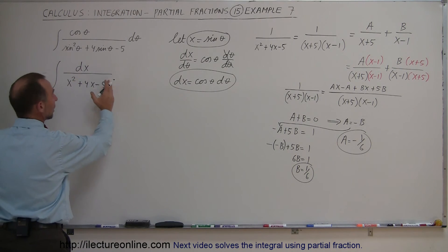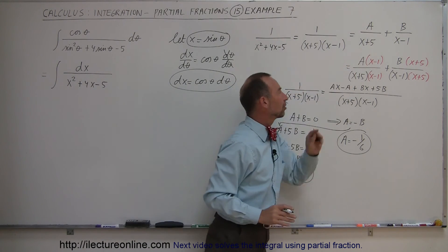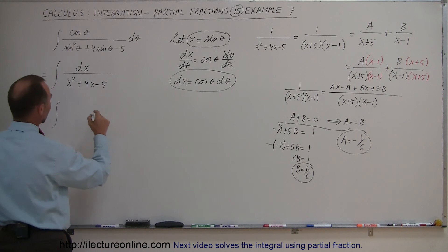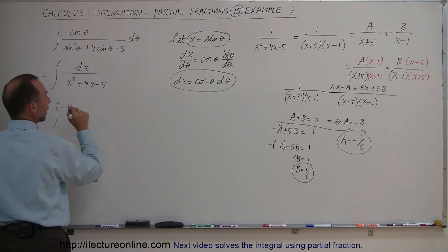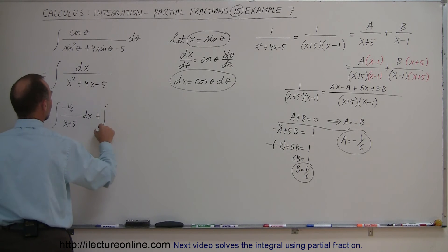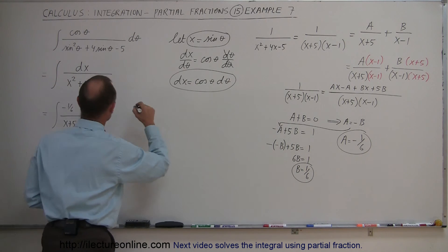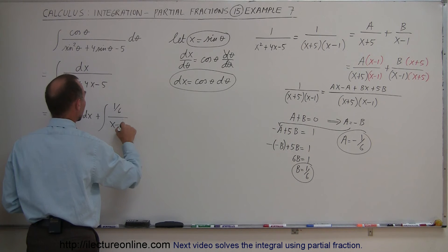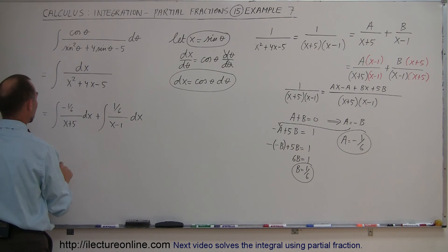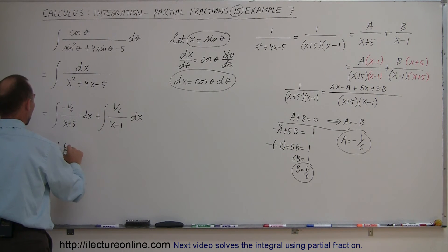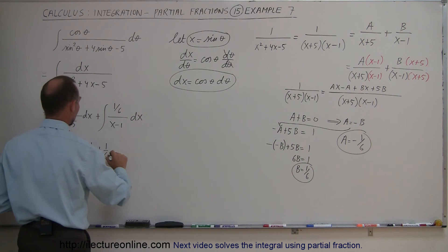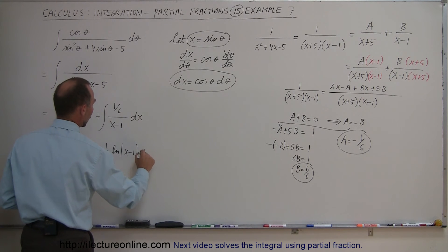With A and B determined, we can write the integral in terms of the two partial fractions. This equals the integral of (−1/6) divided by (x + 5) dx, plus the integral of (1/6) divided by (x − 1) dx. Both are easy to integrate: the result is minus 1/6 times ln|x + 5| plus 1/6 times ln|x − 1| plus C.